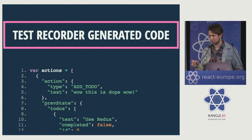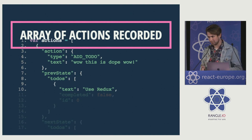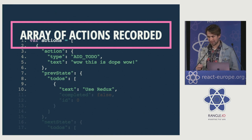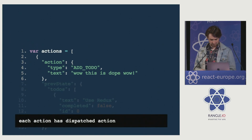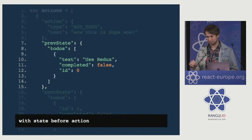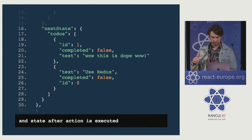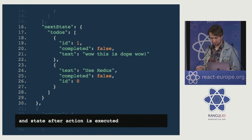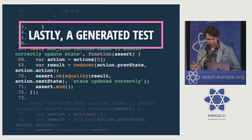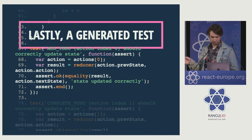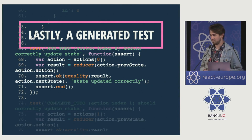I'll quickly walk through some of the generated code that the test would produce. Basically, for every test that gets written, you get the action — which is, like, your to-do. Action type: add to-do. Then you get the previous state, which is the state before the action was fired. And the next state, where you can see your new to-do is in there. Then this will basically write a test where the result is the reducer called with the previous state and the action, and then we assert that the new state equals what the next state was from the generated test.